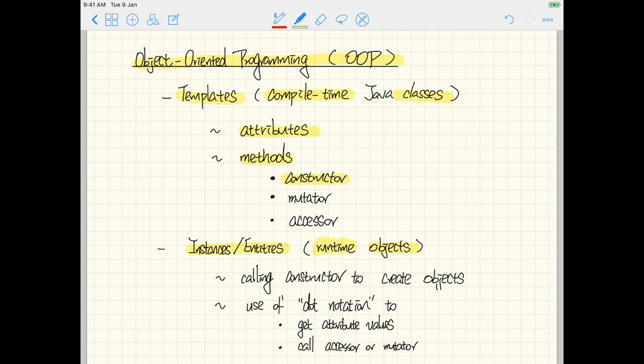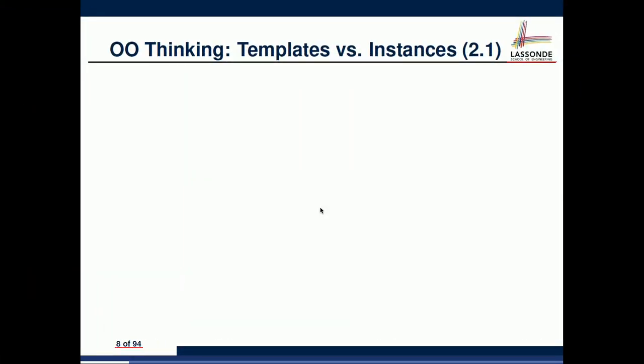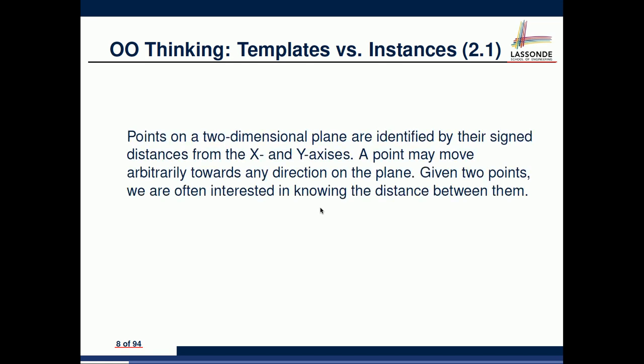These are the parts we'll focus on for the current video, leaving the remaining parts for later. As an example, let me give you some background. Every time you want to do object-oriented programming, you need a problem to solve. Our problem is: points on a two-dimensional plane are identified by their signed distances from the x and y axes, giving two values — x and y coordinates.